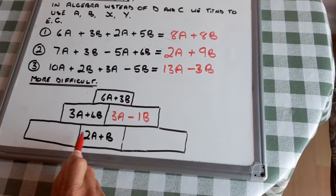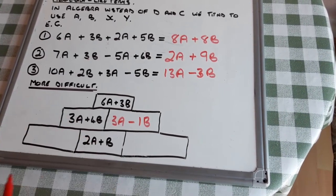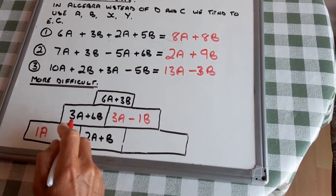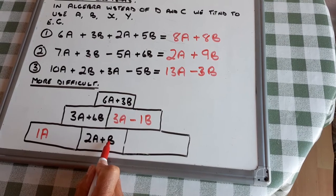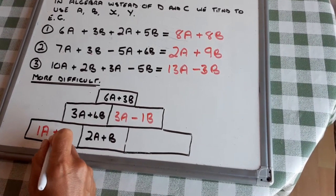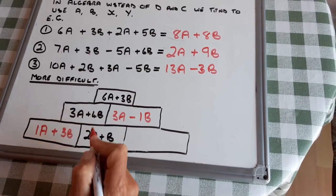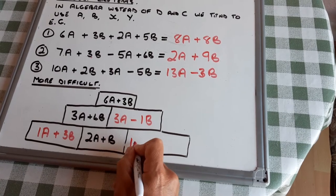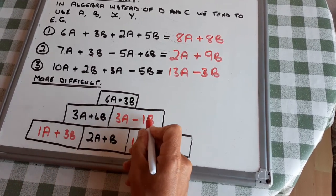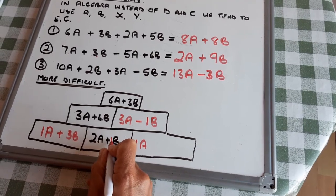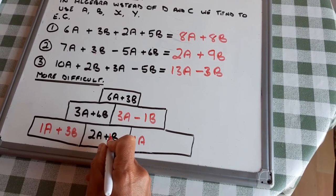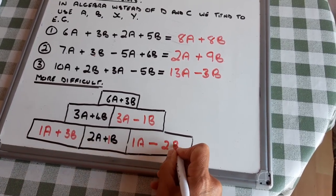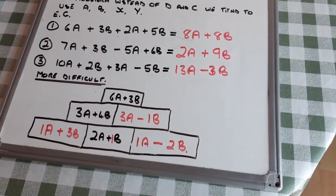Now these two rectangles give me that one. 2A plus 1A is 3A. 1B plus 3B is 4B. 2A to 3A is 1A. Plus B to minus B, so that's plus 1B. Not minus 1. So it's minus 2B.